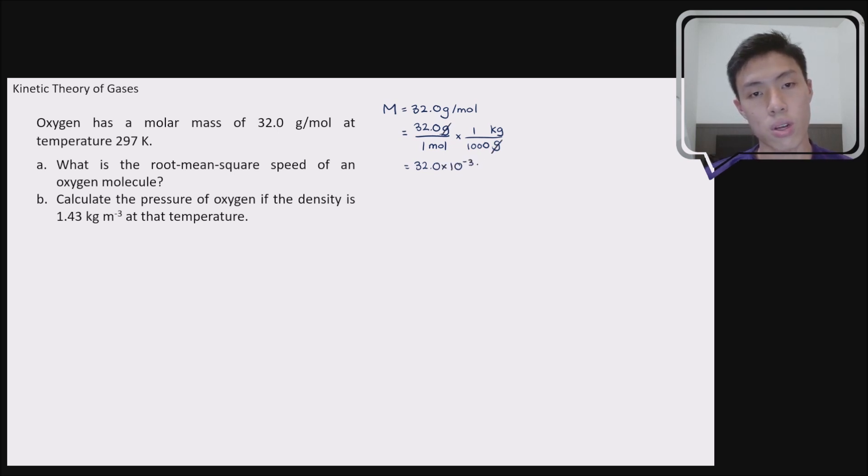Gram gram cancel. You are left with kg per mole. So this is the molar mass in SI unit at temperature of 297 kelvin. So the temperature is given to you in a unit of kelvin. So that's the right unit to be in for temperature. If you get it in degree Celsius, please make sure you convert it into kelvin for our calculation here.